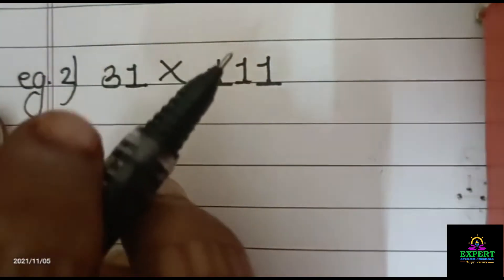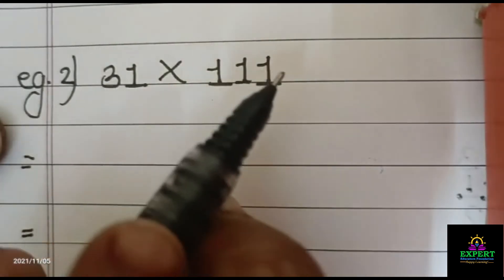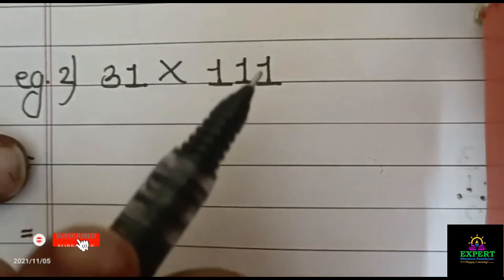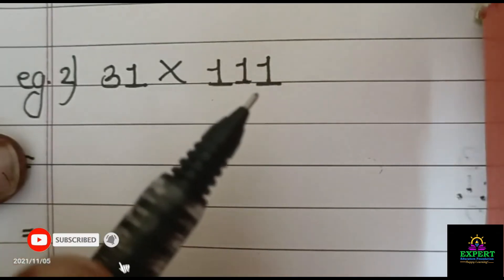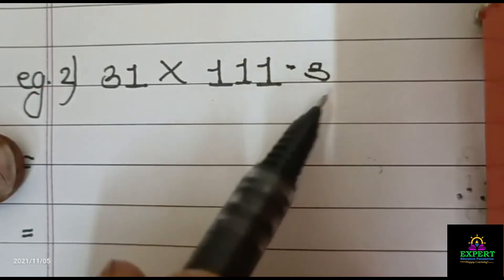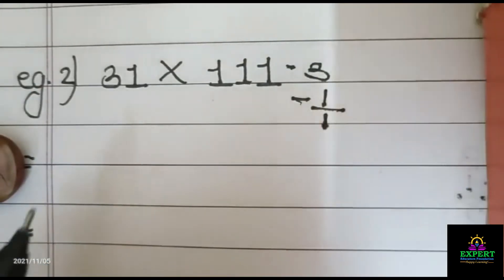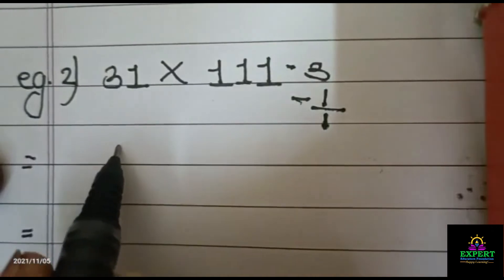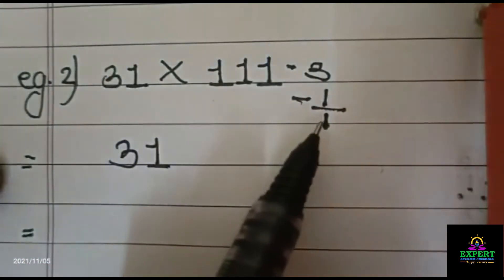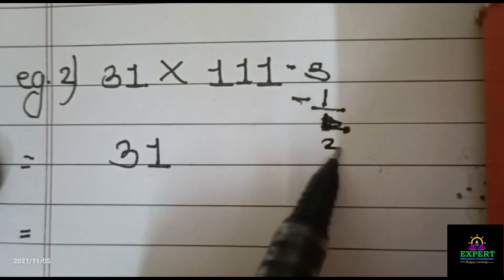Now here is a 3 digit number, 111. We can multiply this type of number also. Now this number is 3 digits and we have to minus 1. Our answer will be 2.